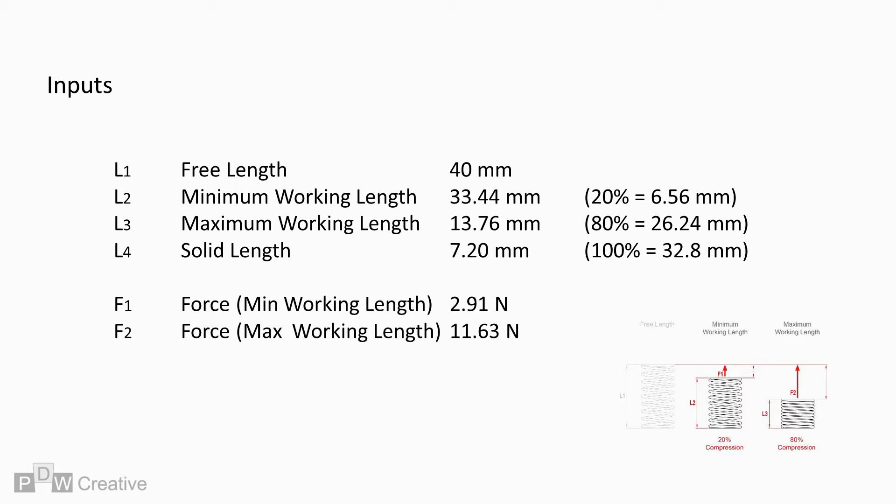Our reference forces are as follows. F1 is the force at minimum working length, which is 2.91 N. F2 is the force at max working length, and this is 11.63 N. Spring rate is 0.443 N per mm.